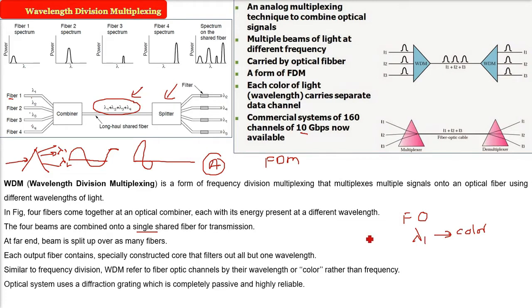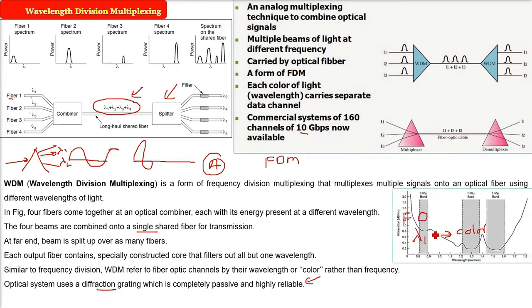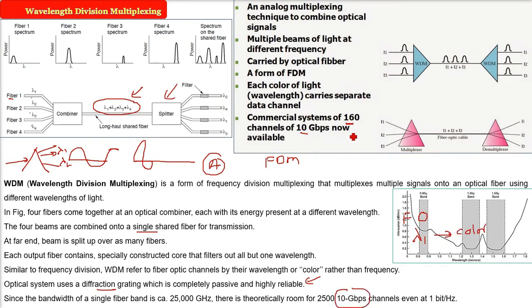So, optical system, they use a diffraction grating and as I said, they are quite reliable because they are completely passive. When we were discussing fiber optics, I told you these are the bands we are taking. Since the bandwidth of a single fiber band is 25,000 GHz, this is theoretically, there is already theoretically room for 2510 Gbps channel even at 1 bit per hertz.